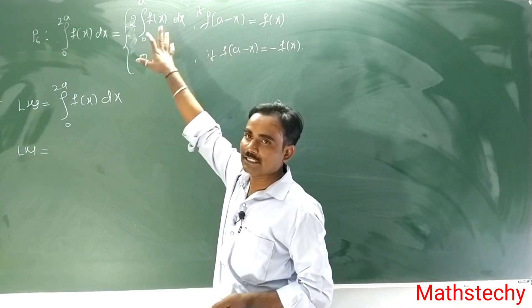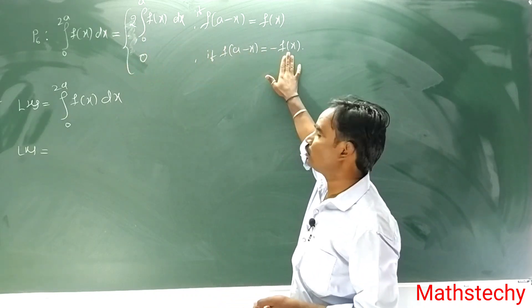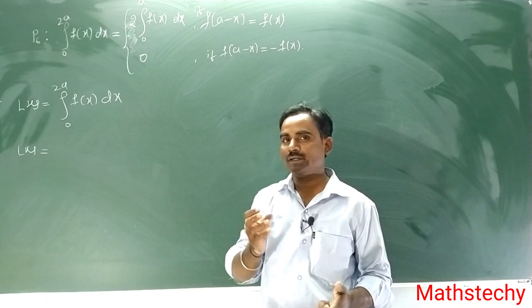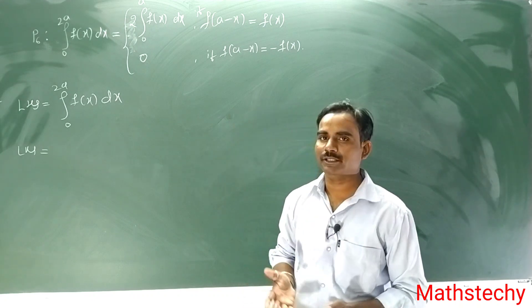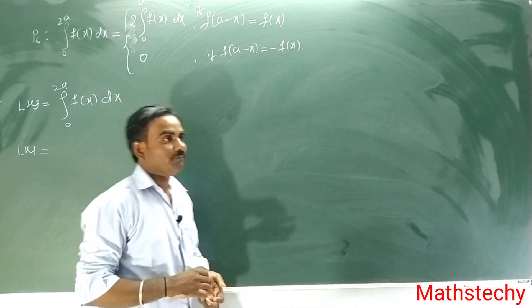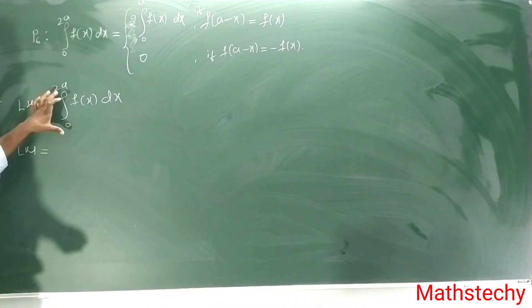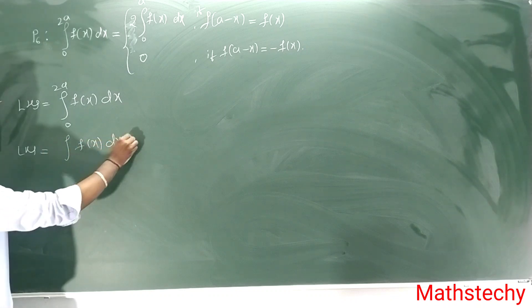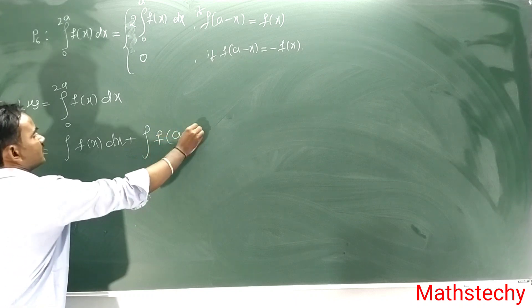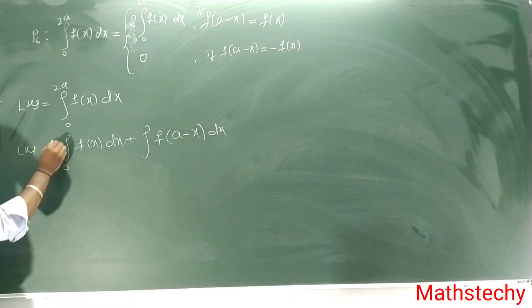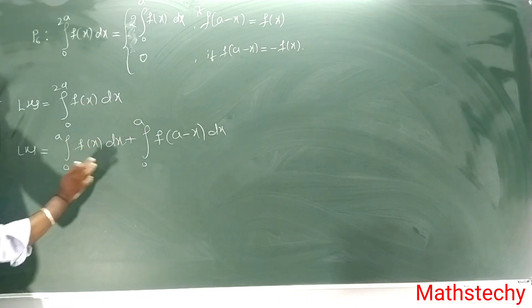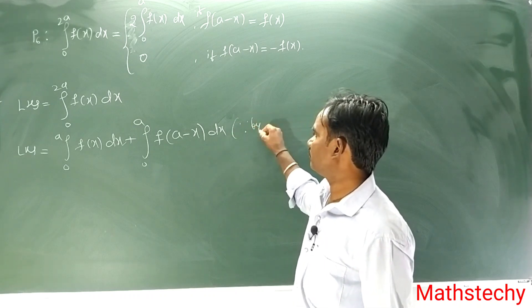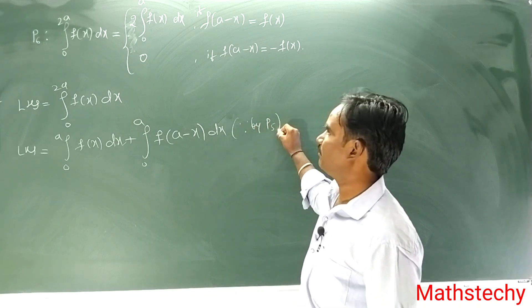2 times of 0 to a f of x dx. This is when f of a minus x is equal to minus f of x — that's a good point, that means you can prove it. I can write like this: f of x dx plus f of a minus x dx. 0 to a, 0 to a — this will be presented directly. One probability — take this, the reason being because of the P5 property.